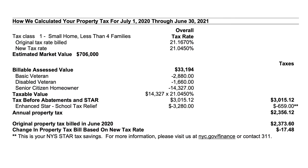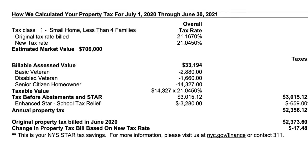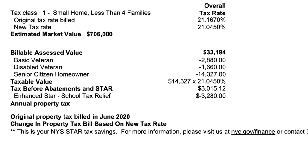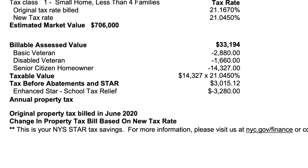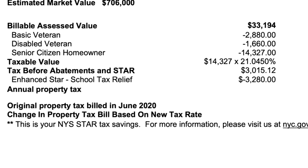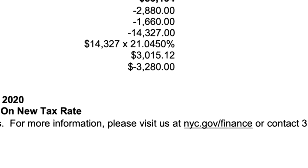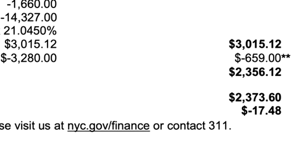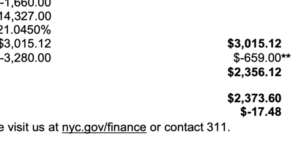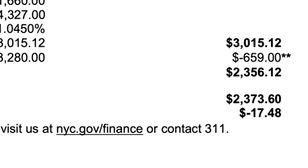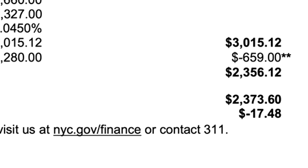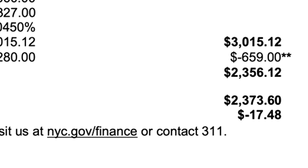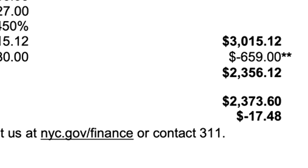Here's an example of a homeowner's tax bill that reflects multiple exemptions — the Veterans Exemption, the Senior Citizen Homeowner Exemption, and Enhanced Star. Originally this bill was nearly $7,000 a year, but with the exemptions it's been reduced to $2,300. That's a savings of over $4,500.